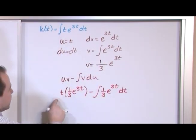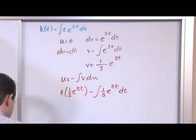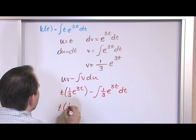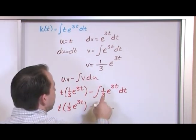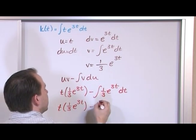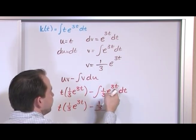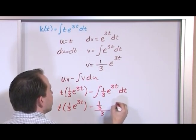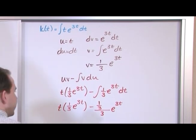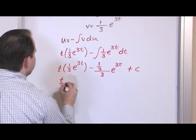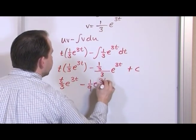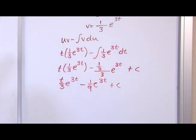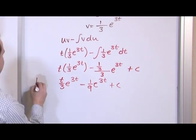u is t, v is (1/3)·e^(3t), so we have t·(1/3)·e^(3t) minus the integral of (1/3)·e^(3t) dt. Integrating (1/3)·e^(3t) dt gives (1/3) divided by 3, which is 1/9, times e^(3t). So tidying up: k(t) equals (t/3)·e^(3t) minus (1/9)·e^(3t) plus a constant. All of this integration by parts was just used to find what k(t) is equal to.